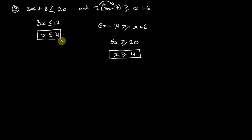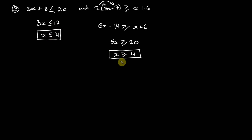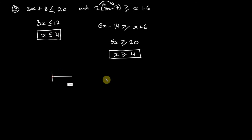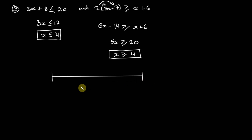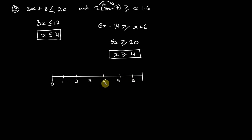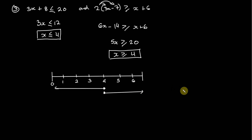We see that x is less than or equal to 4 and x is greater than or equal to 4. It can't be both simultaneously — but it can equal 4. On the number line with a solid dot at 4, x less than or equal to 4 runs left, and x greater than or equal to 4 runs right. Clearly the required set of values is x equals 4. And that's it.